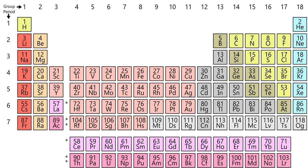Certain elements have no stable isotopes and are composed only of radioactive isotopes, specifically the elements without any stable isotopes are technetium, promethium, and all observed elements with atomic numbers greater than 82. Of the 80 elements with at least one stable isotope, 26 have only one single stable isotope. The mean number of stable isotopes for the 80 stable elements is 3.1 stable isotopes per element. The largest number of stable isotopes that occur for a single element is 10.